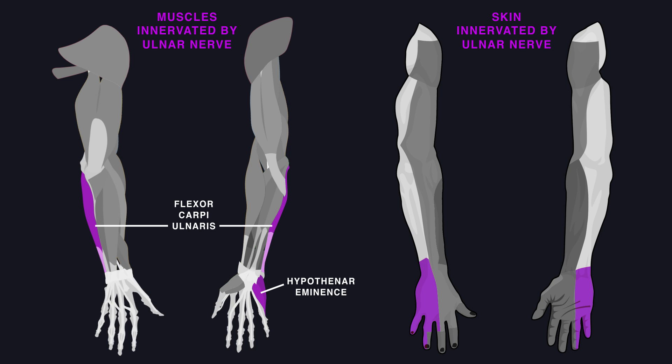The ulnar nerve innervates part of the forearm and the majority of the hand. It gives sensation to the medial forearm, medial wrist, and medial 1 and 1 half fingers.